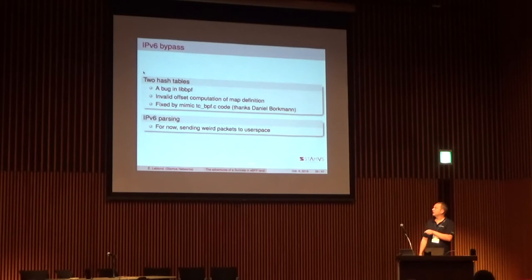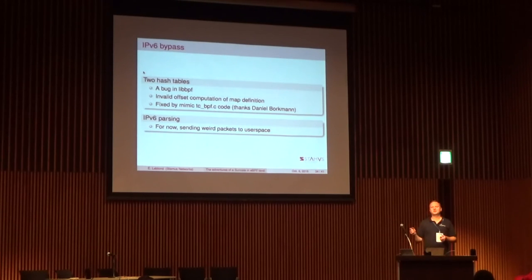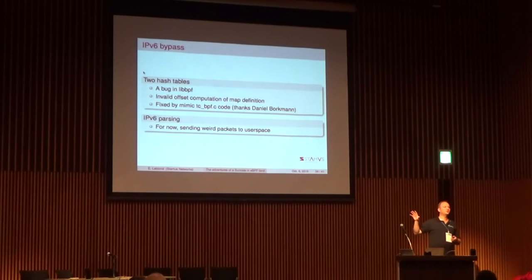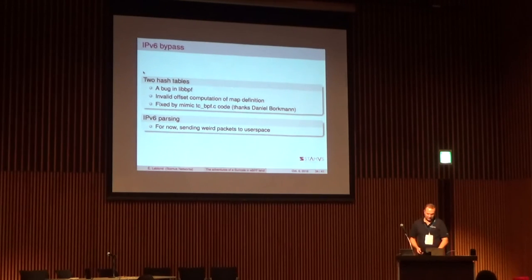For the IPv6 parsing problem, I decided that if people are using advanced IPv6 features like extension headers, in that case it's fine to let the packet go to user space since it's an advanced use case. So let's not bypass flows that use those kinds of features.